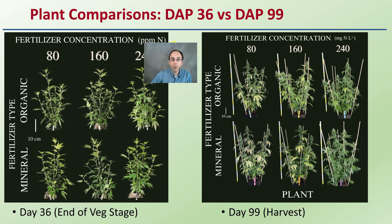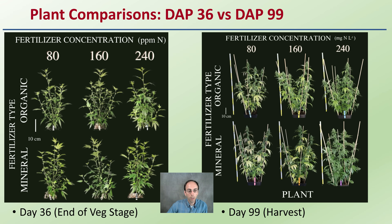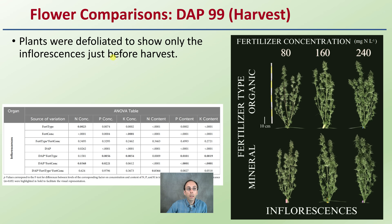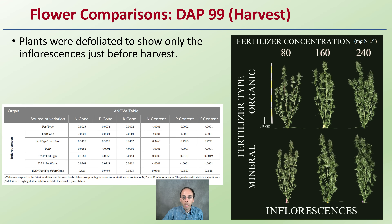Looking at plant comparisons at day 36 and day 99: the top row shows organic fertilizer and the bottom row shows mineral fertilizer. Day 36 is the end of the vegetative stage, and day 99 is the harvest — so you can make some visual comparisons there. Plants were defoliated to show only the inflorescence just before the flower.